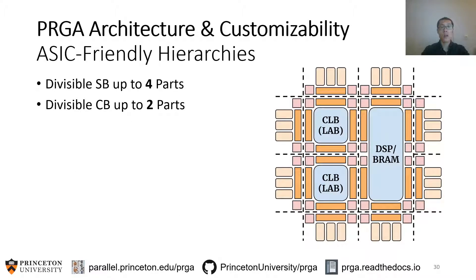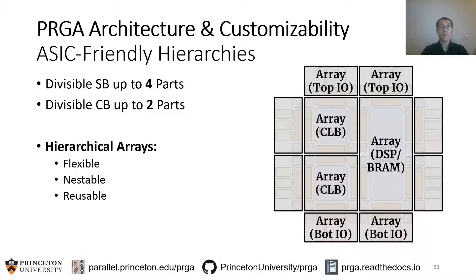Addressing this challenge, PRGA supports divisible routing boxes. As shown in this figure, each switch box can be divided up to 4 parts, and each connection box can be divided up to 2 parts. With divisible routing boxes, we can create regular, reusable, hierarchical arrays. This gives FPGA designers more freedom to choose their ASIC implementation strategy.